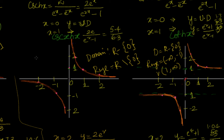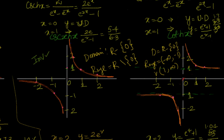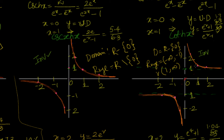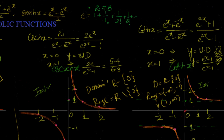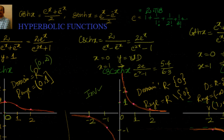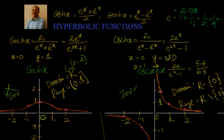For csch(x), it is completely different — for all x-values the y-values are completely different, so we can have an inverse function. Similarly for coth(x), nowhere are the y-values repeating, so it also has an inverse function. In the next session we will go through the inverse hyperbolic functions in detail. Thanks for visiting. Bye for now.